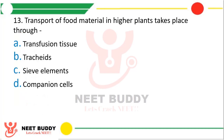Question 13: Transport of food material in higher plants takes place through — transfusion tissues, tracheids, sieve elements, or companion cells. The correct answer is option C, sieve elements.